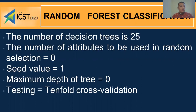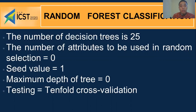Classification method: We use the random forest algorithm because this algorithm can make small changes to bagging and produce a powerful classifier. Random forest is applied with the following variables: the number of decision trees is 25, the number of attributes used in random selection is set to default value, the maximum depth of the tree is zero, and testing is done with cross-validation.